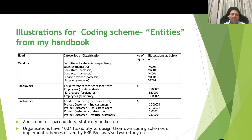Now, illustration for the coding schemes for entities. Here I have given 4 columns: column 1 lists the entities, column 2 is the categories for classification, column 3 is the suggested structure in terms of number of digits, and column 4 is the illustration. For example, vendors of different categories: supplier domestic, consultant domestic, contractor domestic, service provider domestic, supplier overseas. Here I am proposing a 5-digit scheme. The first two digits are alphabetic — V means vendor, and the second letter indicates the type. So the first vendor code is VA001, the next VA002, VA003 and so on. In the case of consultant, it is VB001, VB002 and so on for all other categories.